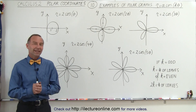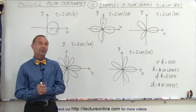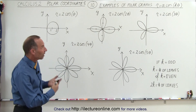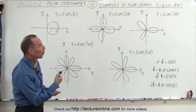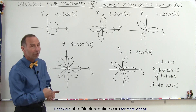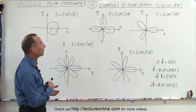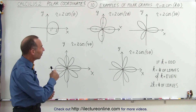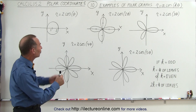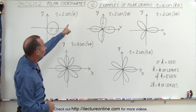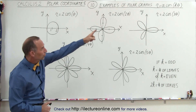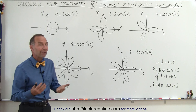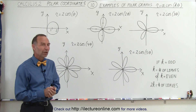Welcome to our lecture online. Now let's take a look at the function y equals some constant times the cosine of k theta. We're going to vary k, starting at k equals 1, k equals 2, k equals 3, 4, and 5 to see what the graph looks like.